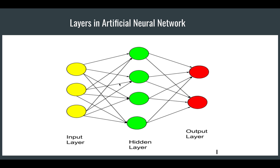Weights basically represent the importance of each feature. For example, if you are predicting house prices with three input neurons — area, number of bedrooms, and whether the location is urban or rural — the weight tells the model which feature is most important. The area neuron likely gets a higher weight since larger area means higher price. During training, through backpropagation, the model learns and updates these weights.